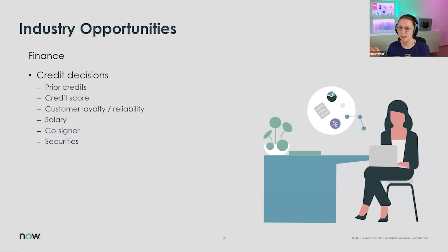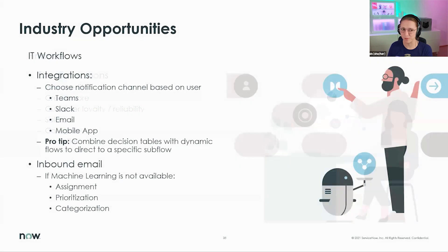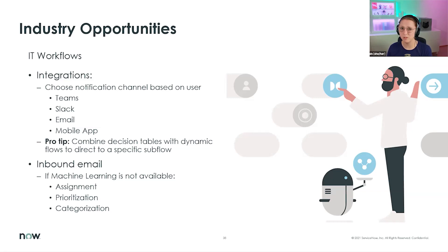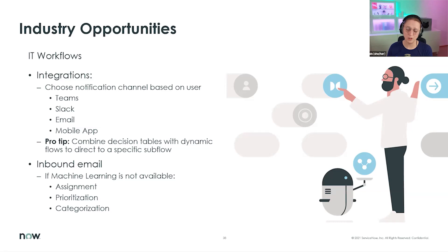In finance, credit decisions can be made based on prior credits, credit score, loyalty programs, salary, cosigner status, or securities. For IT workflows: based on a specific decision, route to the right department or region, or choose a notification channel — Teams, Slack, or email — based on user criteria. While working on this, I remembered a humongous inbound email script with all the if/then/else and case-switch logic just to determine the right queue and team assignment. Decision tables would have made that so much easier.